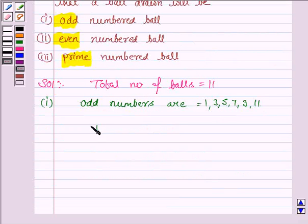So the probability of drawing an odd ball will be 6 by 11. As we know that the probability of any event E is given by the number of outcomes favorable to E upon the total number of outcomes. Now here E is the event of drawing a ball numbered odd. And since there are 6 odd numbers between 1 to 11, so the probability is 6 by 11.